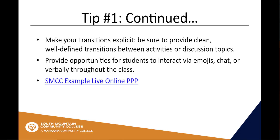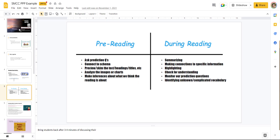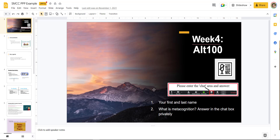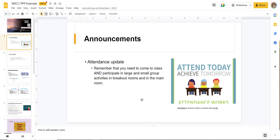Let's take a look at an online example. This was a course created for ALT 100. When students came into the class, they added their first and last name to the chat box, and then they had to talk about what is metacognition. This gave students an opportunity to go through their notes from previous classes and readings. Then there were some brief announcements — just housekeeping points.